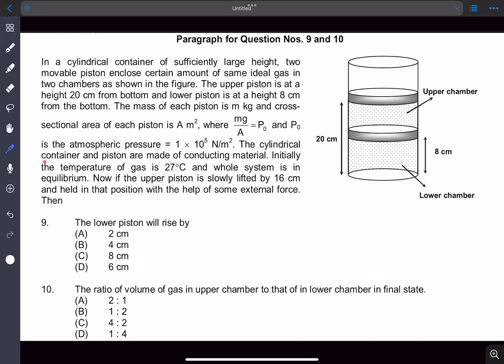The cylindrical container and piston are made of conducting material. Initially the temperature of the gas is 27 degrees Celsius and the whole system is in equilibrium. Now the upper piston is slowly lifted up by 16 centimeters and is held at that position with some external force.